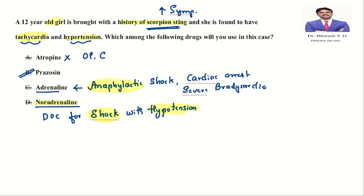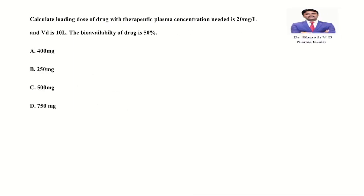For scorpion sting, the drug of choice is prazosin, which is an alpha blocker. Now, the next question: calculate the loading dose of a drug where the therapeutic plasma concentration needed is 20 mg/L, volume of distribution is 10 liters, and bioavailability of the drug is 50%. Pause the video and try to calculate.